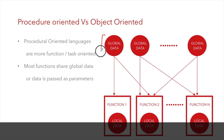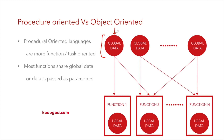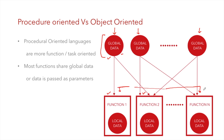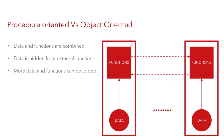In procedure oriented languages, we have global data in each file or across multiple files. These individual modules all have global data, and this global data is accessible via functions in those files. Similarly, the same data can be accessed via functions in other files. The important point is that global variables are accessible across all functions — so in a way there is no security, as any function can access any data.